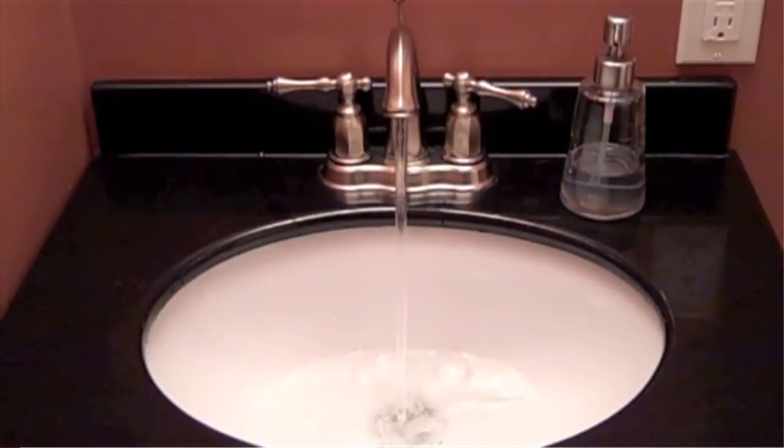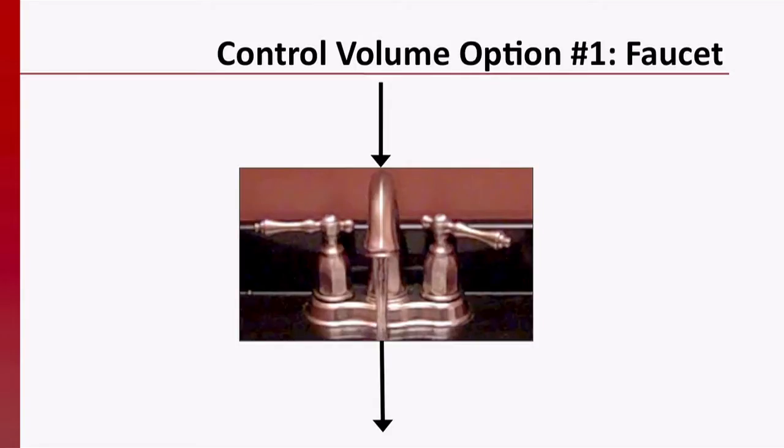Here we have a sink filling with water. What if we wanted to know how much water is accumulating in the basin? What control volume might we choose to help us answer this question? What if we were to define the faucet as our control volume? We could look at the flow into and out of the control volume. Would this give us enough information to figure out how much water is accumulating in our basin? No.